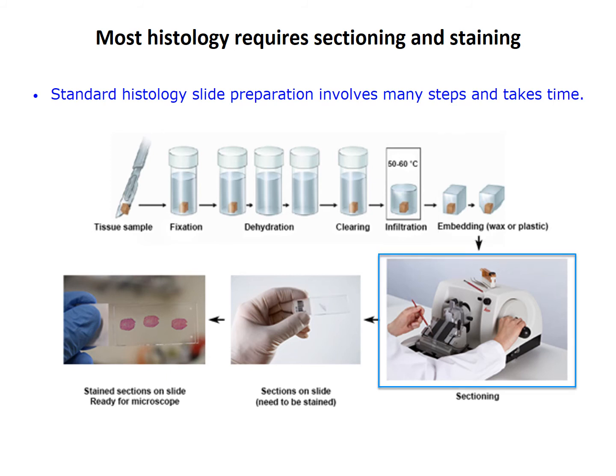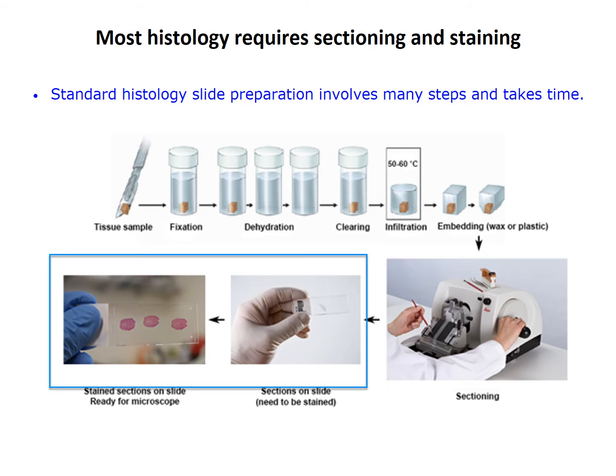Sectioning is done with a machine called a microtome. It moves the sample up and down, each cycle advancing it towards a knife a fixed short distance, such as 5 microns, to make thin sections. The sections are then collected on glass slides. If the sample was embedded in paraffin, that is removed with organic solvents. The sample is rehydrated and treated with stains. Finally, a clear mounting medium is added and a thin glass cover slip is placed over the section. When the mounting medium hardens, the slide is ready for the microscope.